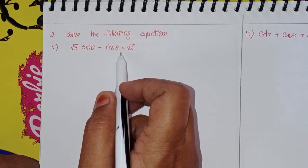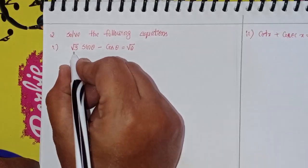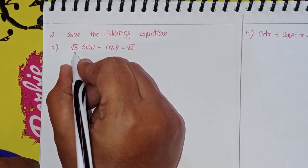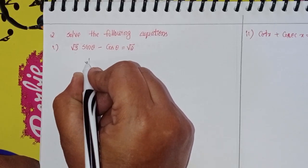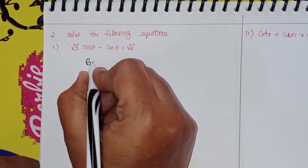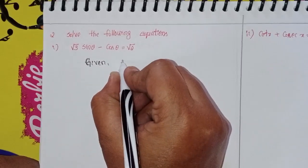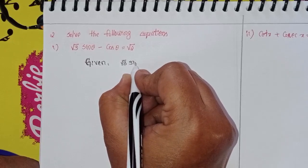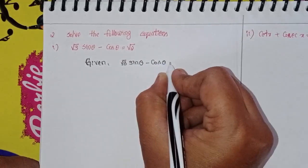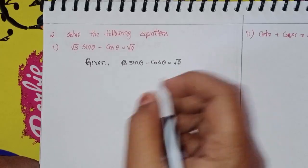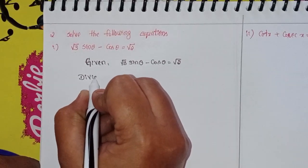See here: the given equation is √3·sinθ − cosθ = √2. First, we will divide both sides.